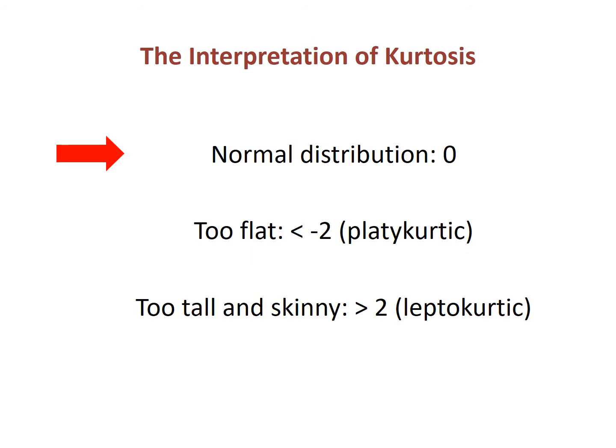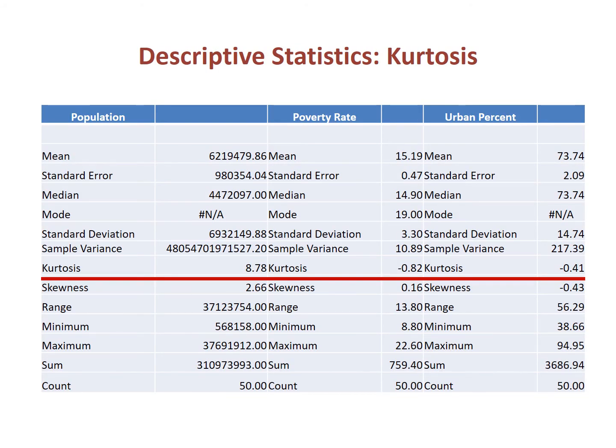Kurtosis has to do with the height of the distribution. This is important because it affects whether there is enough variation in the variable between the low and high values — by definition, a variable has to have variation. If the distribution is flat, it is said to be platycurtic; we regard it as flat if the kurtosis statistic is less than minus two, though we often do not care because a flat distribution has plenty of variation. We are more concerned about distributions that are too tall and skinny, called leptokurtic, present when the kurtosis statistic exceeds two. Note that again, the only variable that is not normal is population.